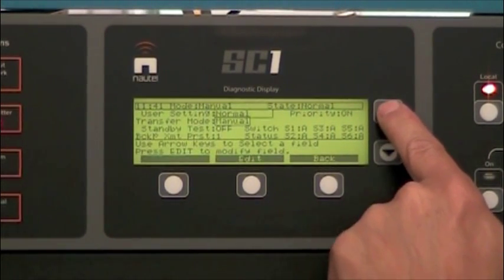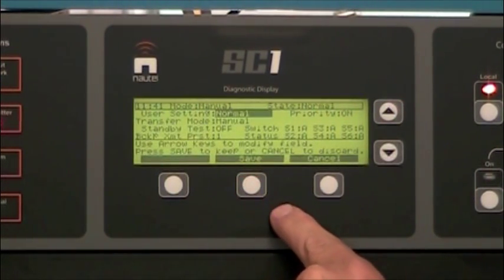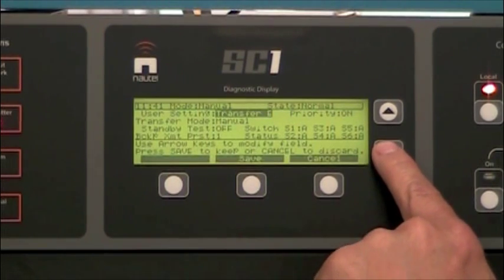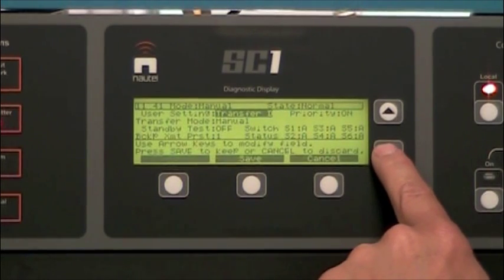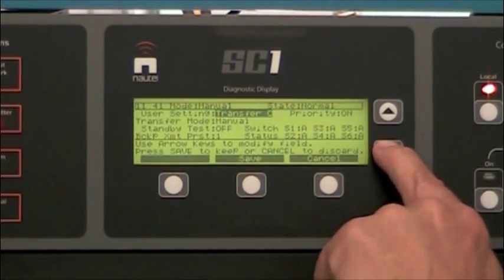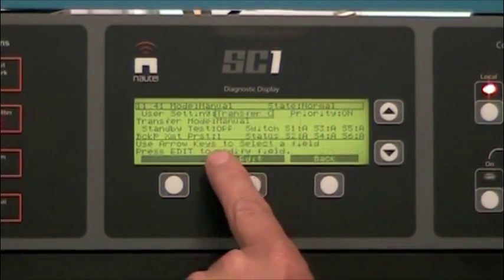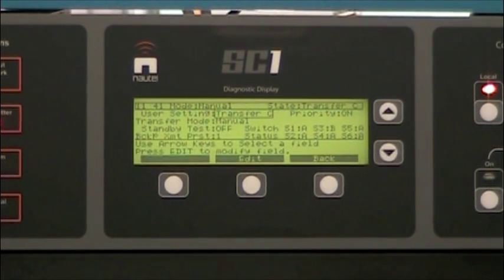Go up to the user setting which is normal. Edit that. And select whichever transmitter we wish to switch to the dummy load and put the N plus 1 into the antenna. So we will select C. Save. And that has done the transfer. As simple as that.